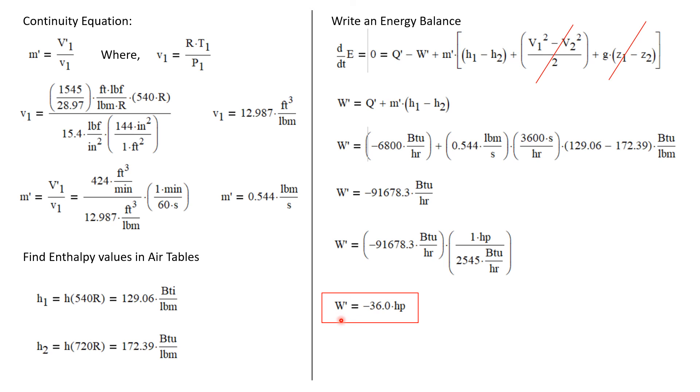Because we define work, or in this case power, as positive when being produced by the system, the power required by the system is negative. So we have W dot is minus 36.0 horsepower.